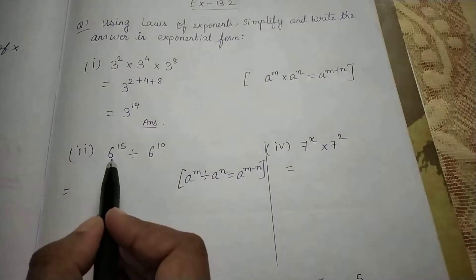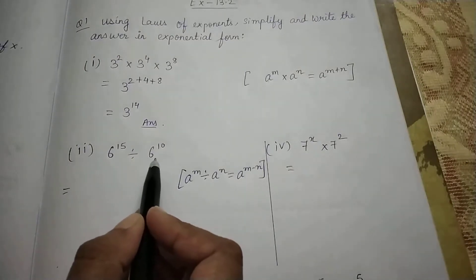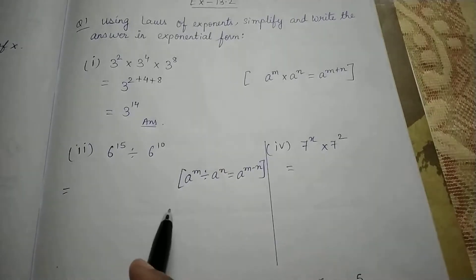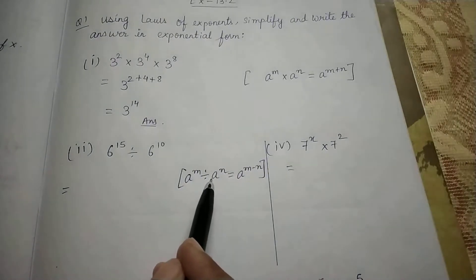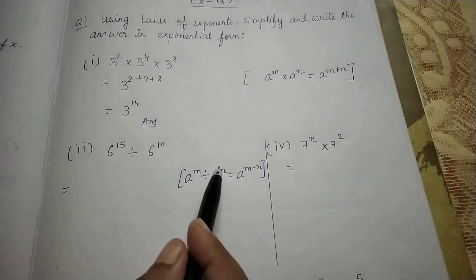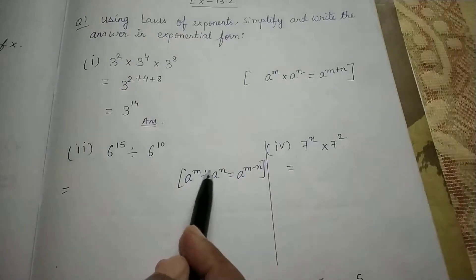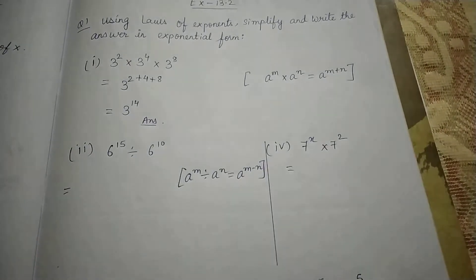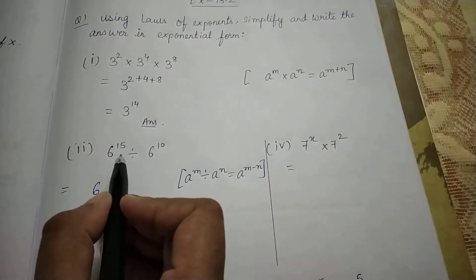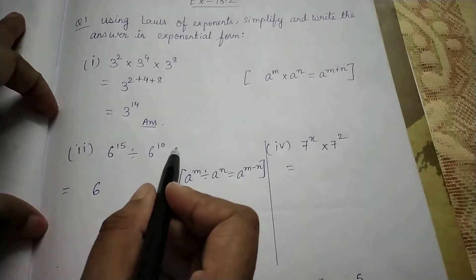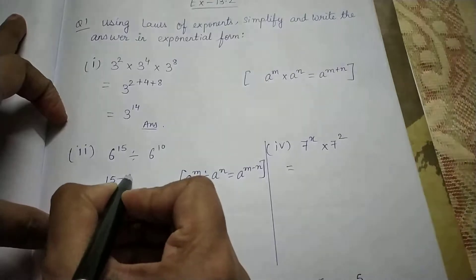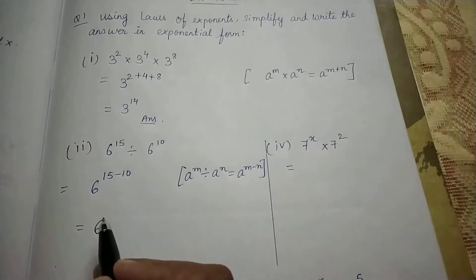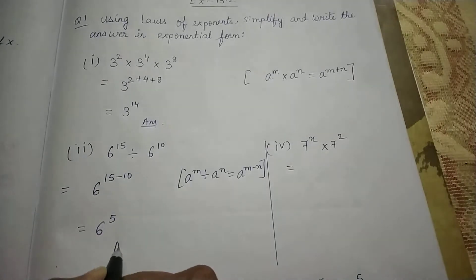Now see number 2: 6 to the power 15 divide 6 to the power 10. I can see the base is same and the power is different. Recall the law of exponents: a to the power m divide a to the power n — when the base is same, powers are different, and a division sign is there, you need to subtract the powers: m minus n. So keep the base 6 as it is, and subtract the powers: 15 minus 10 gives 5. So the answer is 6 to the power 5.